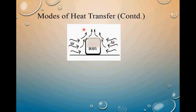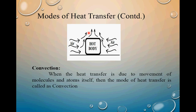The second mode of heat transfer is convection. Consider a hot body kept in surrounding air. Air molecules and atoms come in contact with the hot body, absorb heat, get excited, and move from the high temperature region to a low temperature region. Here, the molecules and atoms themselves move — their movement is not restricted. When heat transfer is due to movement of molecules and atoms themselves, it is called convection. Convection is dominant in liquids and gases, because in both, the movement of molecules and atoms is not restricted.